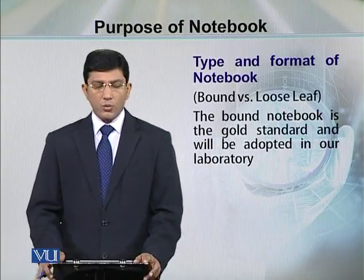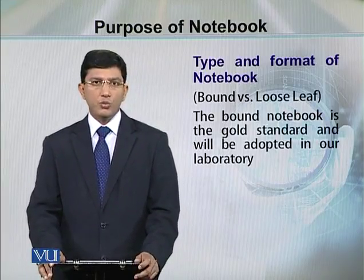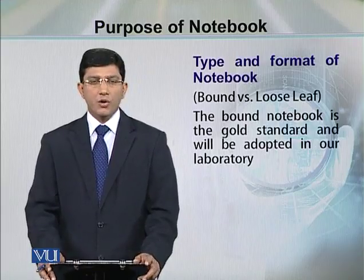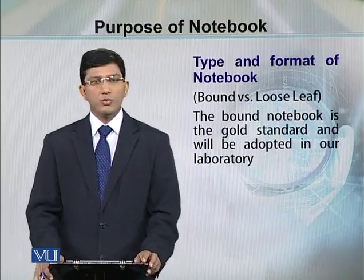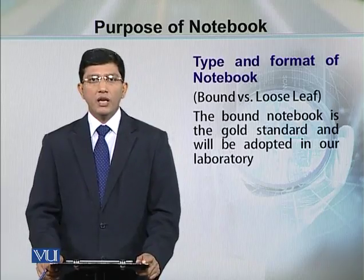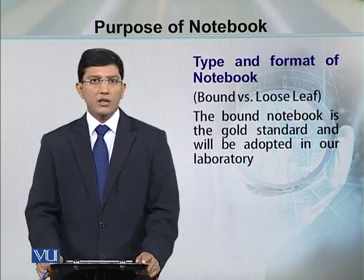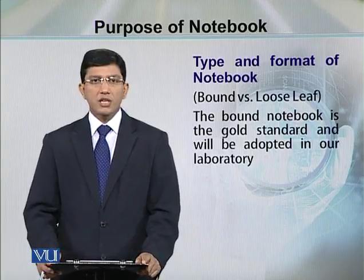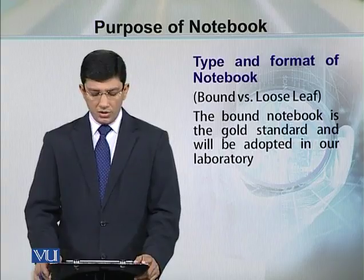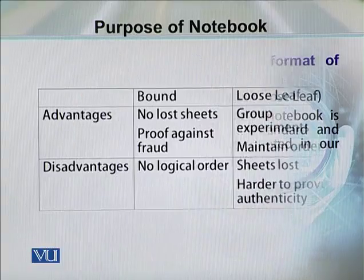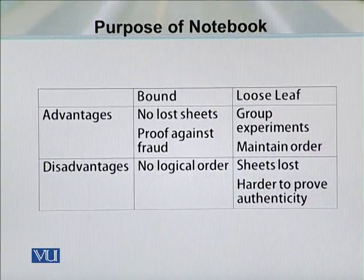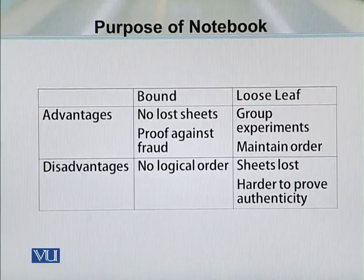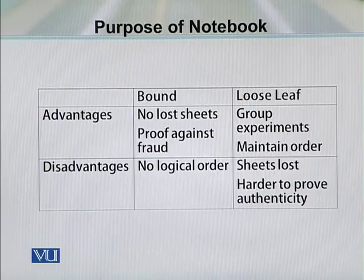What format of a notebook should one use? Normally, we deal with two types of notebooks. One is in the loose sheet form with ring binding, and the second is in the permanent bound form. The permanent bound form is the gold standard notebook to maintain records because it has advantages over the loose sheet notebook. The advantage of the bound notebook is that you have no fear of losing the sheets.